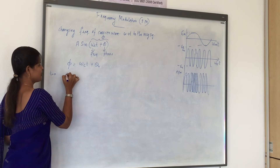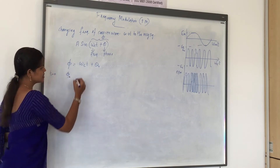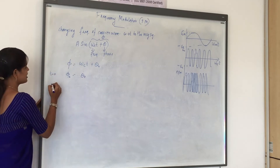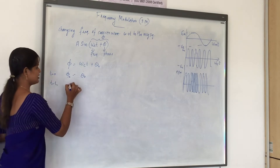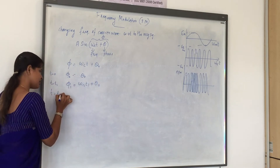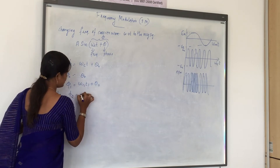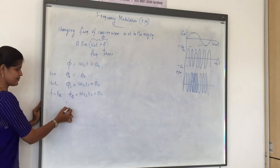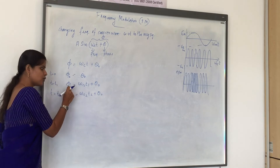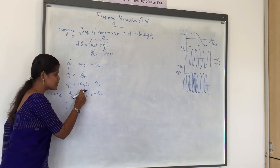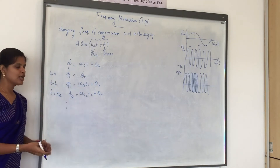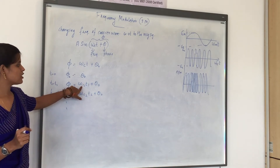When t equals 0, phi — represented as phi₀ — will be equal to 0 + θ₀, which is θ₀. Taking another instance, when t equals t1, then phi₁ will be equal to ωc1·t1 + θ₀. From this equation, we see that at a particular instant, the total angle is only dependent on the variation of frequency at that instant. If you want to calculate the angle phi, you take the frequency only, because the phase is constant.